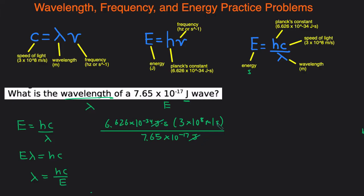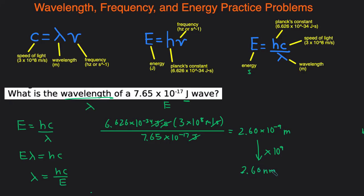We can cross out like units: joules cancel, and per second and seconds cancel, leaving us with meters for the wavelength. Plugging in: 6.626 times 10 to the negative 34 multiplied by 3 times 10 to the 8th, divided by 7.65 times 10 to the negative 17. With three sig figs, that gives us 2.60 times 10 to the negative 9 meters. If the question asks for nanometers, we multiply by 10 to the 9 and get 2.60 nanometers.